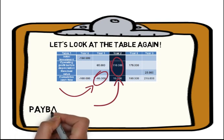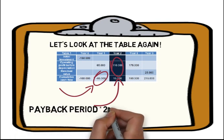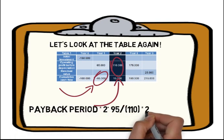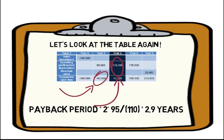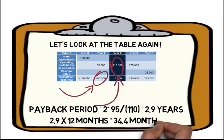So when we plug that into the payback period formula, we get 2 plus 95,000 divided by £110,000 equals 2.9 years. Having said that, many people don't like those 2.9 years. So we're going to multiply that by 12 months, which is going to give us 34.4 months.